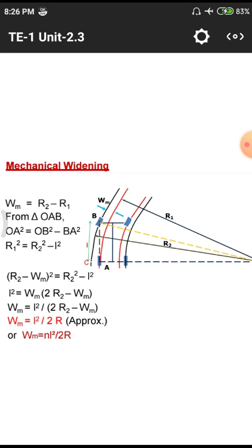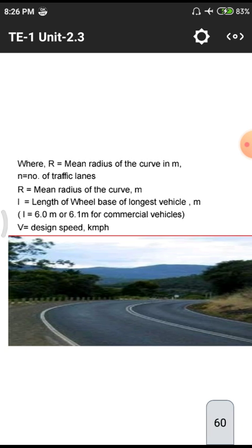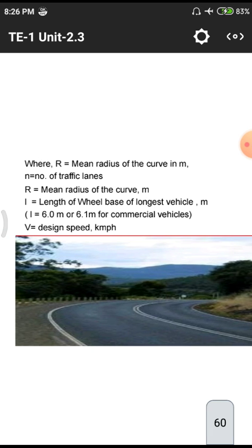The mechanical widening formula gives Wm equals n times L squared by 2R, where n is the number of lanes, L is the wheel base length equal to 6.1 meters for common vehicles, and R is the radius of the curve in meters. The IRC empirical formula for physiological widening is Ws equals V by 9.5 root R, where V is the design speed and R is the radius of the curve.